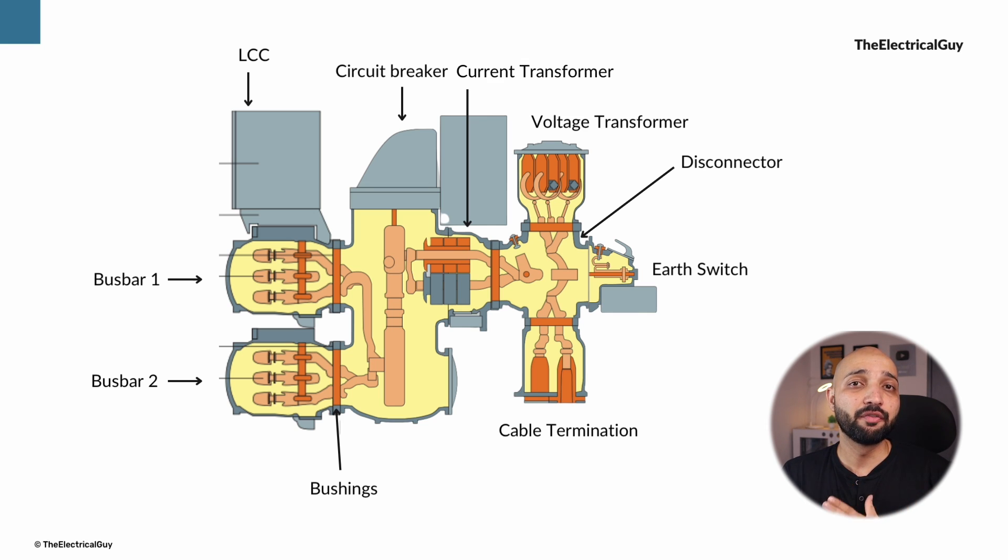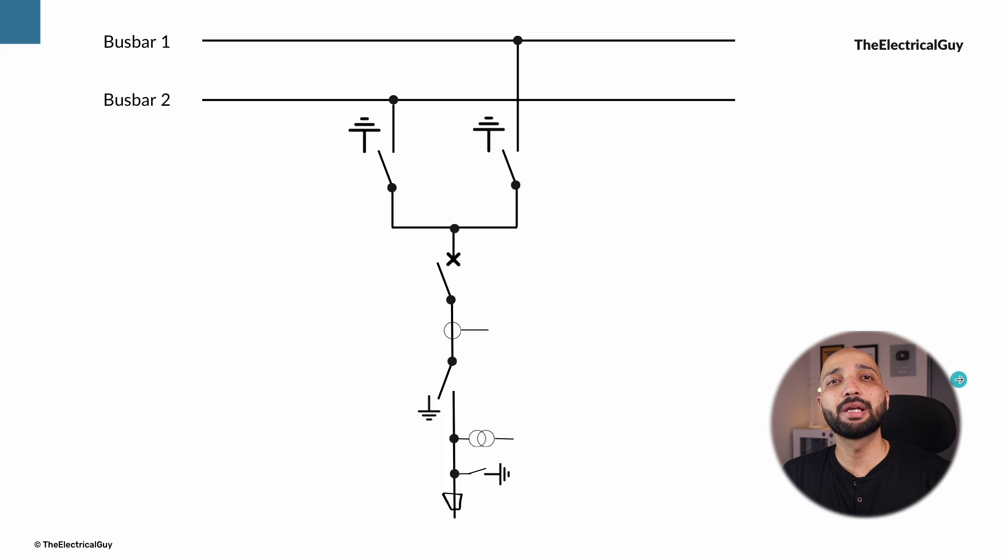Before we understand the different components used here, we need to understand the single line diagram so that we can understand the arrangement of different switchgear in a better way. Here is the typical double bus bar scheme used for 145kV voltage level.